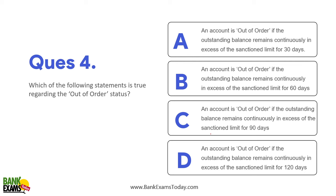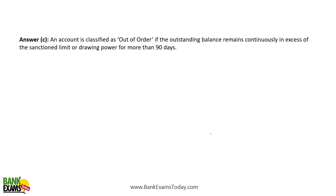Question four: Which statement is true regarding out-of-order accounts? For cash credit (CC) accounts, we use the term 'out-of-order' rather than NPA. An account is out of order if the outstanding balance remains continuously in excess of the sanctioned limit for 90 days.